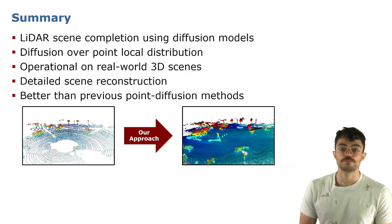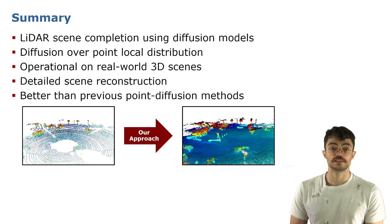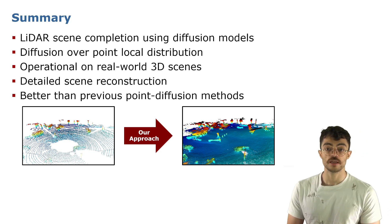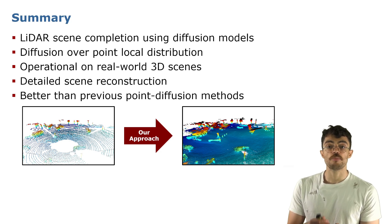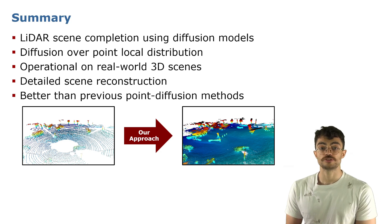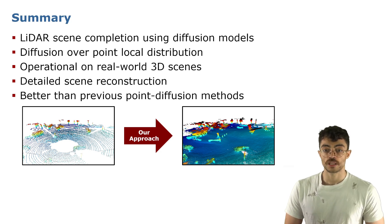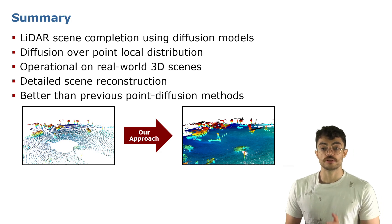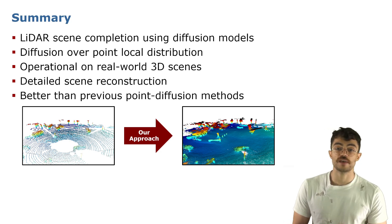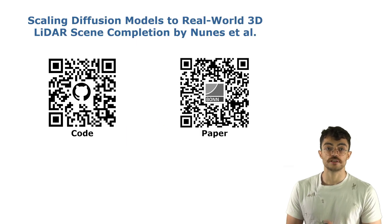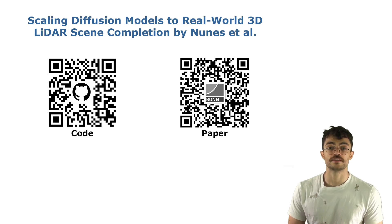To summarize, in this paper we use diffusion models to achieve LiDAR scene completion. We reformulated the diffusion process as a local problem, where we leverage only the local point neighborhood during the denoising process, which enables our method to operate on real-world 3D scenes. Our method achieves more detailed scene reconstruction compared to previous scene completion methods and especially compared to previous point diffusion methods. If you find our work interesting, we invite you to check out our code and paper via the QR codes. Thanks.